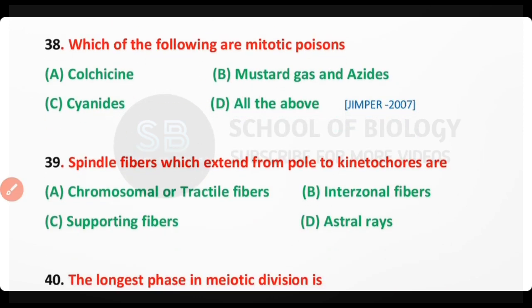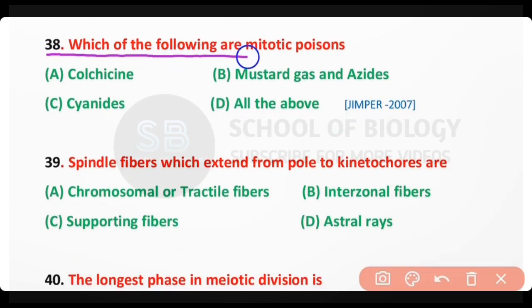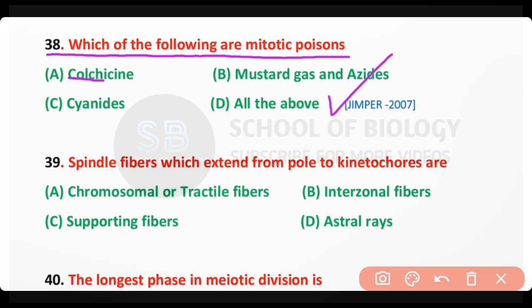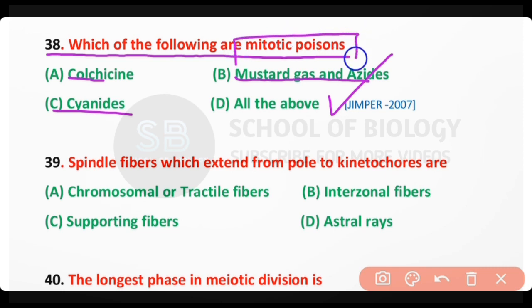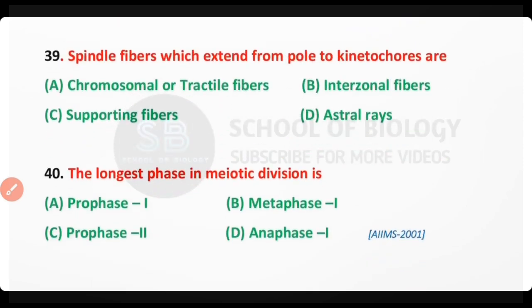Question number 38. Which of the following are mitotic poisons? Colchicine; mustard gas and azides; cyanide; all of the above. The correct answer is option D. Colchicine, mustard gas, different azides, and cyanide compounds are all mitotic poisons.